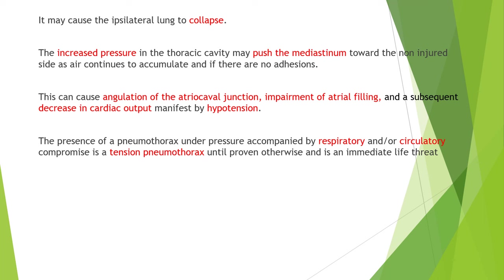The thoracic cavity may push the mediastinum towards the non-injured side as air continues to accumulate if there are no adhesions. This can cause angulation of the atrio-caval junction, impairment of atrial filling, and a subsequent decrease in cardiac output manifested by hypotension. The presence of pneumothorax under pressure accompanied by respiratory or circulatory compromise is tension pneumothorax until proven otherwise and is an immediate life-threatening emergency.